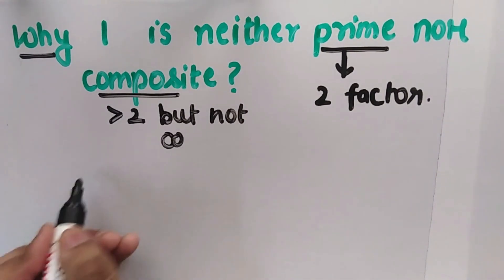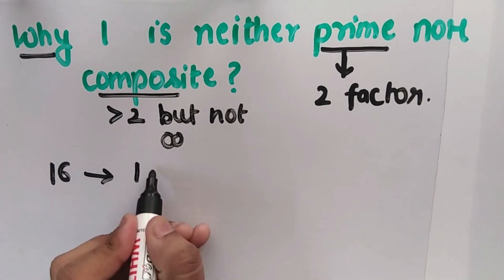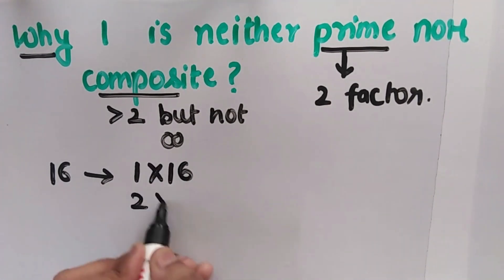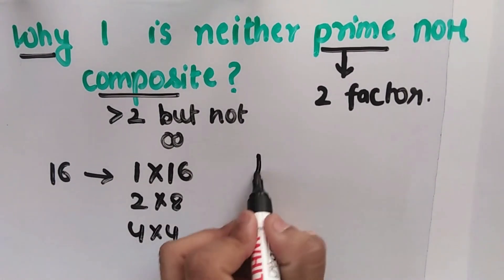So if we talk about, for example, 16. 16 is not a prime number, but let's talk about its factors. What are the factors? How do we write the factors for 16? It's 1 times 16, another one is 2 times 8, and we can write 4 times 4. So what are the factors for 16?